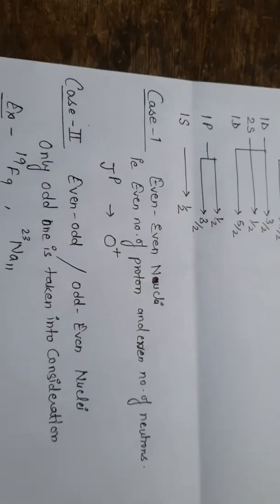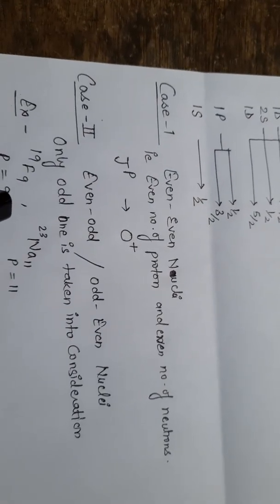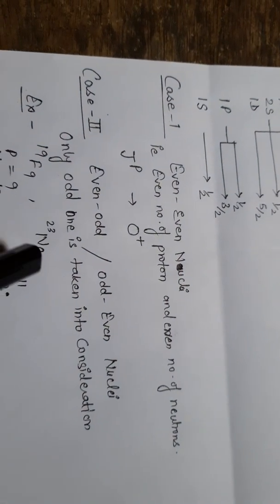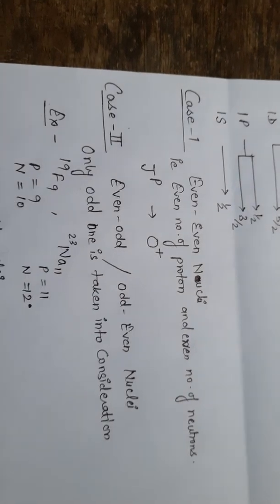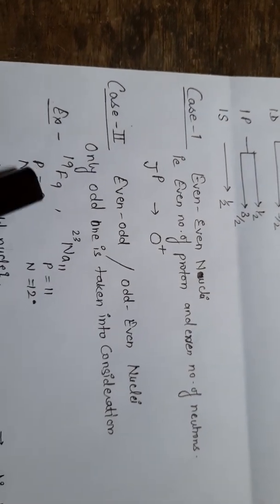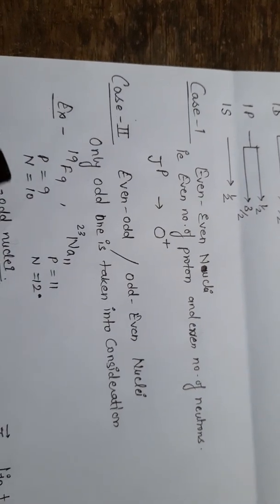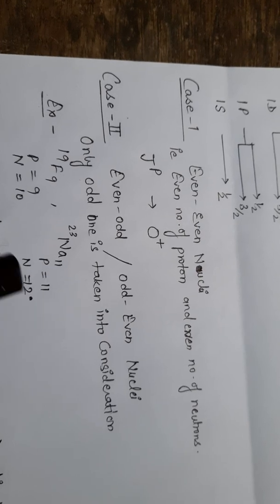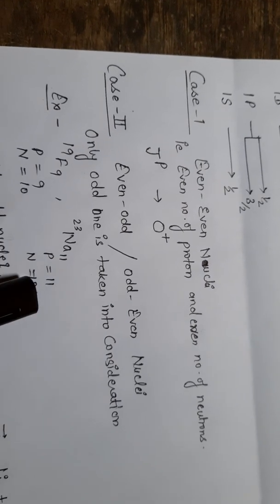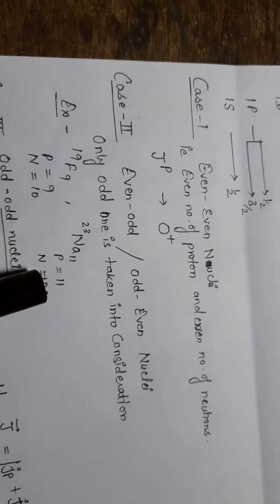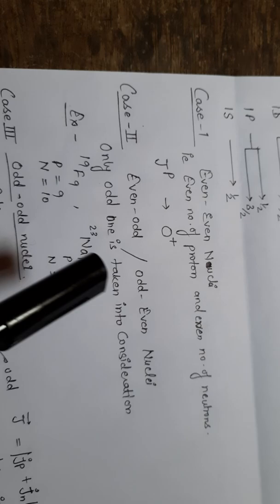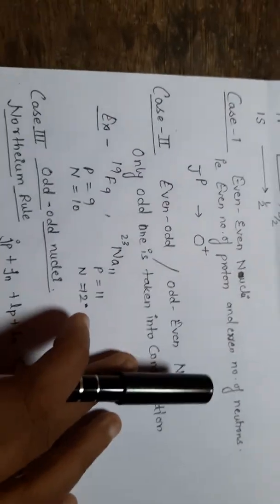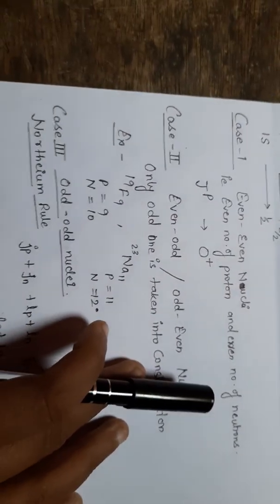Examples of even-odd or odd-even nuclei are 19F with 9 protons and 10 neutrons, and 23Na with 11 protons and 12 neutrons. These are typical cases where only the odd nucleon group determines the spin parity.